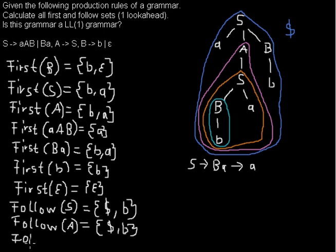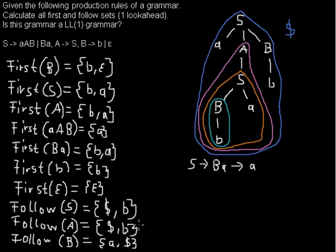Last but not least, we calculate the Follow set of B. Let us have a look at where B appears in the rules. In this case, B is followed by a terminal a, so we don't have to look any further. And in this case, B is at the end of a rule that derives from the starting symbol, so after B you can have the end of the word — that is the dollar sign. So now we have calculated all the First and Follow sets. There's another question: is this grammar an LL(1) grammar? That I will answer in another video.